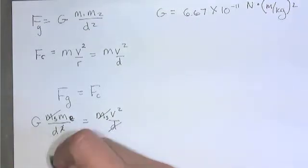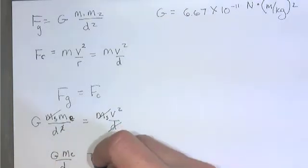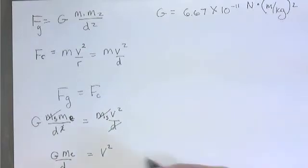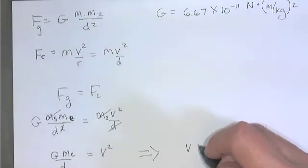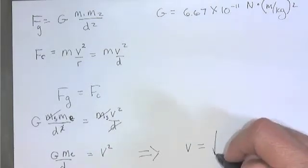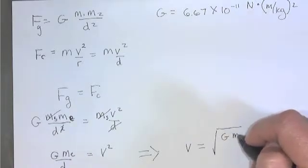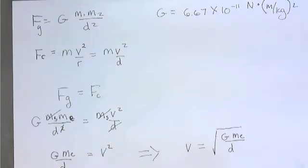And pretty soon you get Gme over d equals v squared. And if you want to solve for that velocity, we call it the escape velocity, it's going to be the square root of G, the mass of the Earth, over d, the distance your satellite is.